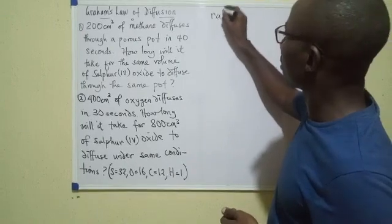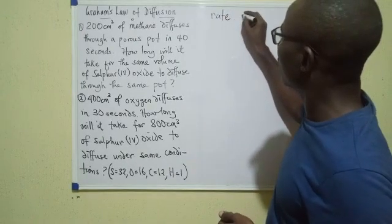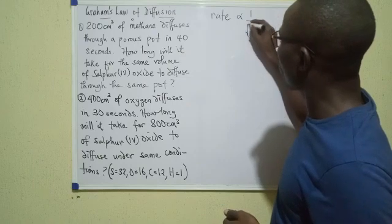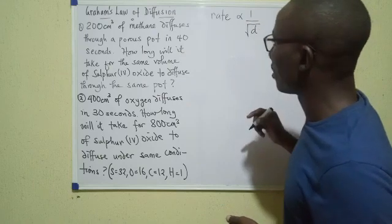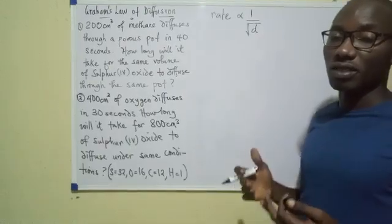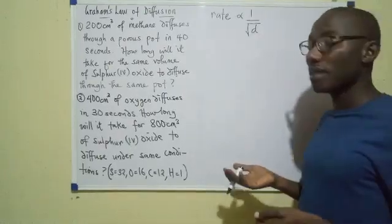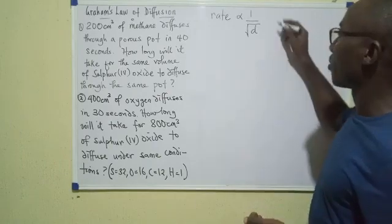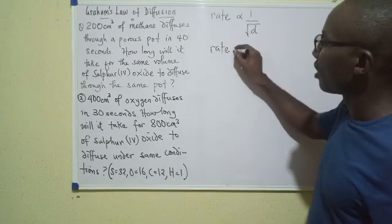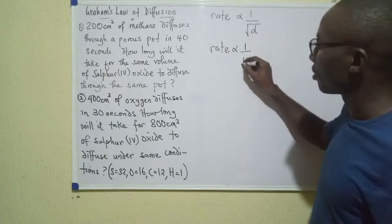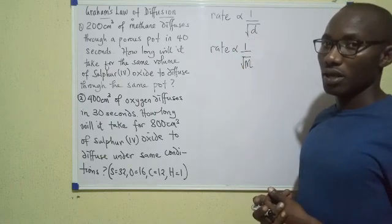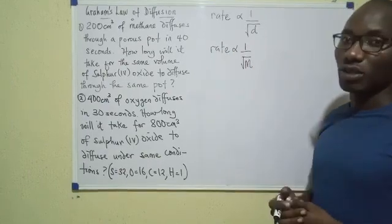The rate of diffusion of a gas is inversely proportional to the square root of its density. Now because density is closely related or varies in the same way as molecular mass or molecular weight, we could as well say rate of diffusion is inversely proportional to the square root of molecular weight. So this is Graham's law.